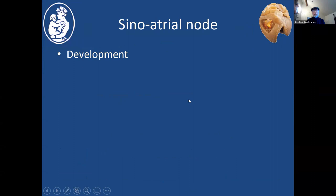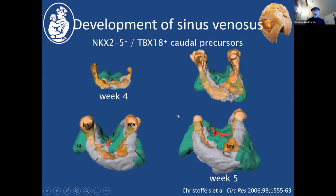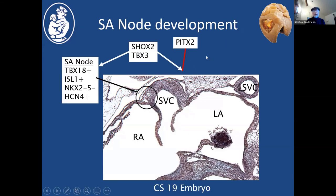The sinoatrial node develops from sinus venosus myocardium, which gets added to the primitive heart tube around week four to five. These derive from caudal second heart field cells that express TBX18. Unlike virtually all other myocardium added to the heart tube once it differentiates, these cells don't express NKX25, which is one of the major transcription factors involved in organizing the cardiac transcription cascade. So this is a bit unusual type of myocardium that gets added.